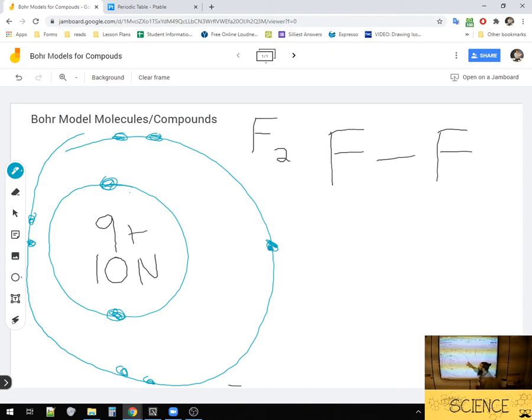They're going to share this electron. On our next one, how we'll show the sharing of electron is by overlapping their outermost electron shell.